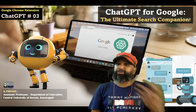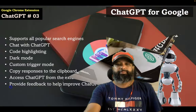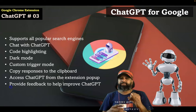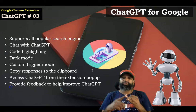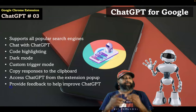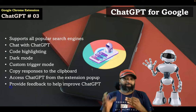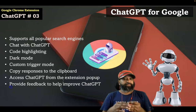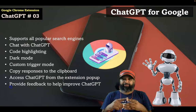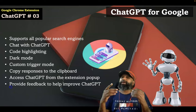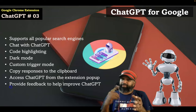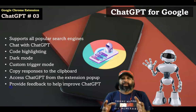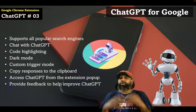Here are some of the features of this extension: it supports all popular search engines, lets you chat with ChatGPT to get more information about your query, supports both the GPT-3.5 Turbo and GPT-3 versions of the official OpenAI API, and you can access ChatGPT from the extension pop-up. It also includes code highlighting, dark mode support, feedback options, a custom trigger mode, and copy responses to clipboard.